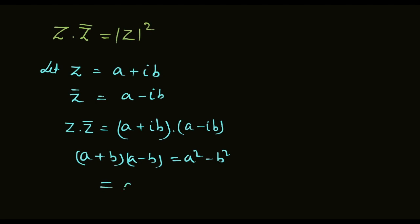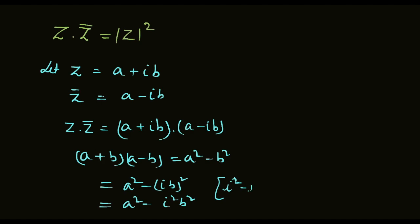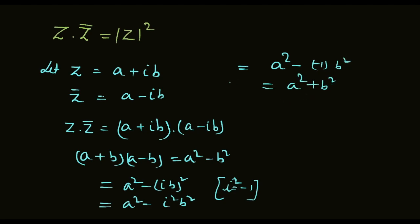इसको solve करेंगे: a square minus (iota b) whole square equal to a square minus iota square b square. तो iota square equal to minus 1 होता है, तो a square minus (minus 1) b square. इसको solve करके आजाएगा a square plus b square.